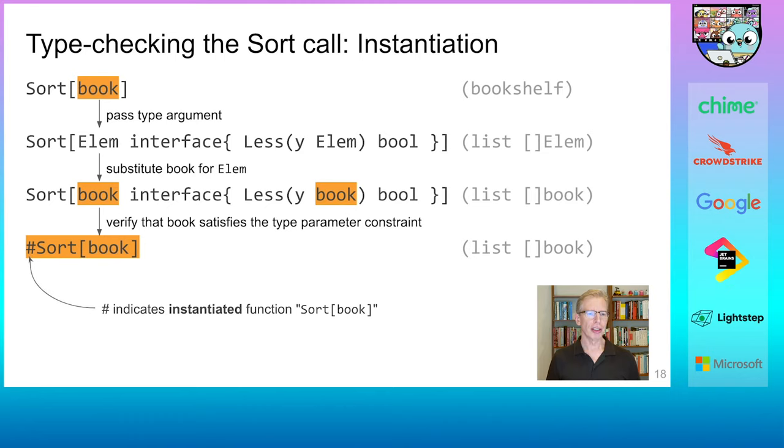First, it substitutes the type argument for its type parameter in the entire function signature. Here, the type parameter element is replaced by book everywhere. In the signature. Then the compiler checks that book in fact satisfies the respective constraint. That means it must implement that constraint interface. It is absolutely crucial to compare against the rewritten less method, which is expecting a book argument. And as expected, it does, and so it's all good. If it didn't, we would get a compile time error.